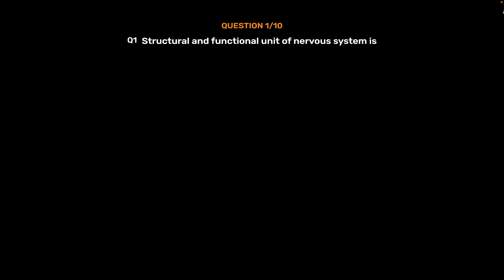Question 1: Structural and functional unit of nervous system is: Option A, Neuron; Option B, Hormone; Option C, Nephron; Option D, None of these. The correct answer is Option A, Neuron.